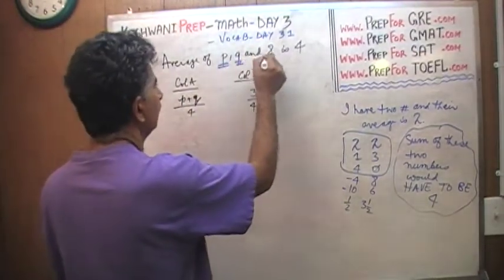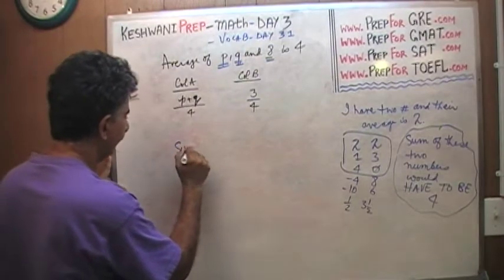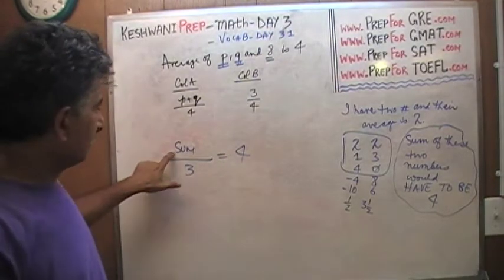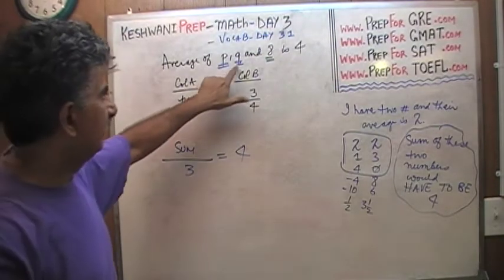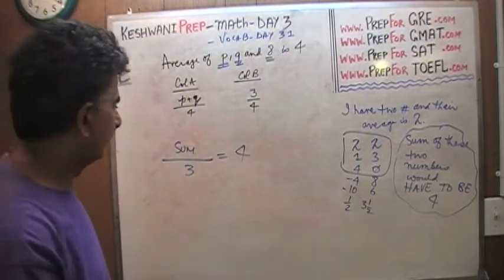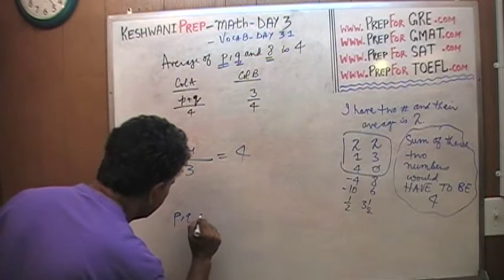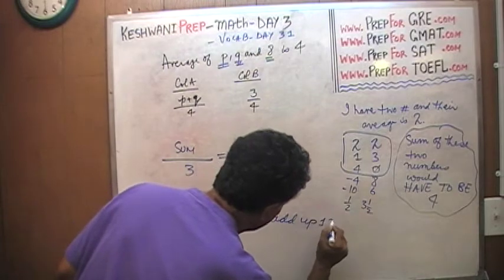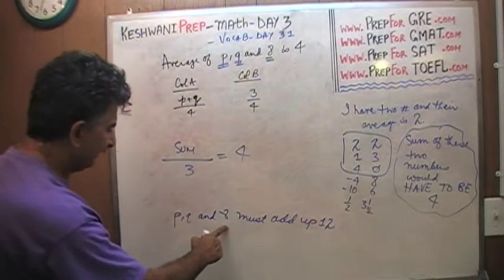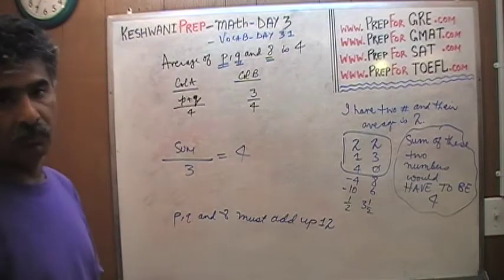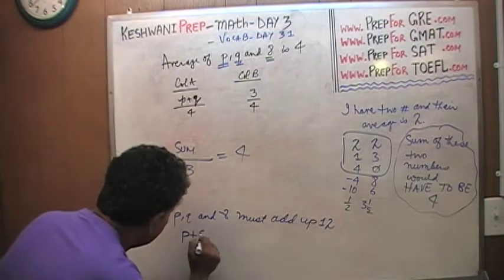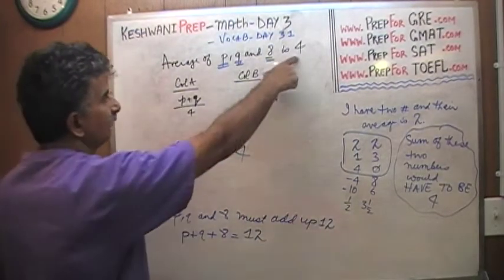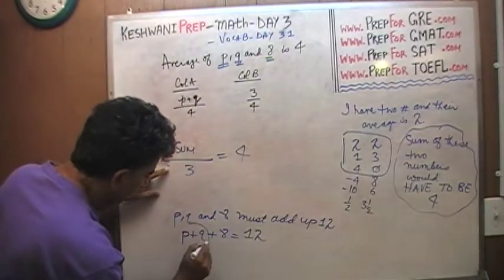Here we have three numbers. Three numbers, their sum divided by three because there are three of them has to equal four. So what can we say about their sum? These three numbers, P, Q and eight must add up to twelve. Well, if one of them is eight, then P and Q must add up to four. P plus Q plus eight has to add up to twelve because twelve divided by three is going to give us an average of four. Therefore, P plus Q must be four.